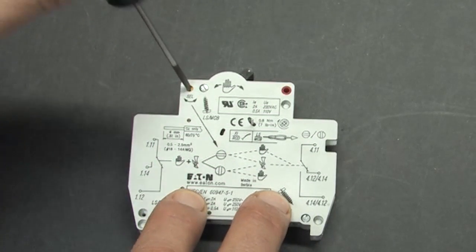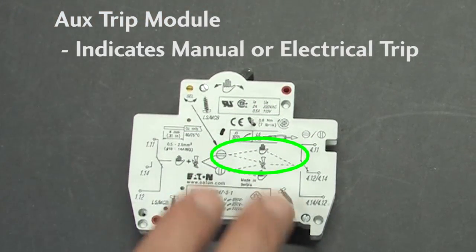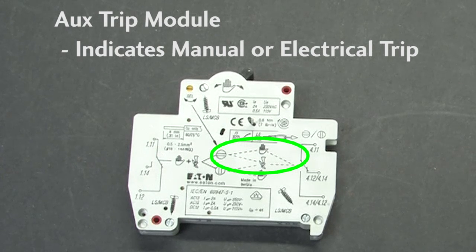If I rotate this little switch right here, now both sets of contacts trip on either manual or electrical faults.